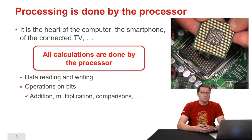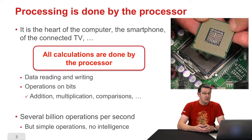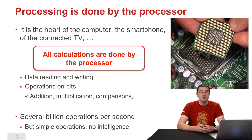What can the processor do? It can read and write data in the memory, and also perform operations on it — operations on bits, on numbers: additions, multiplications, comparisons, etc. Modern processors can perform several billions of operations per second, but those operations are very simple — additions and multiplications, things like that. It is not intelligent; it will do very simple things, but it will do them very well and very fast.